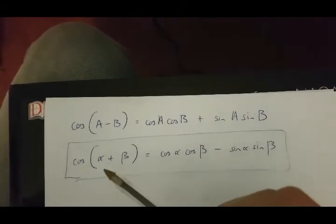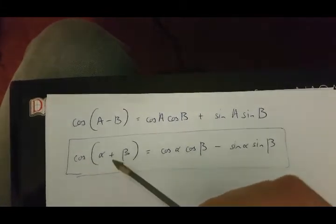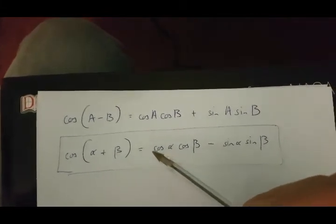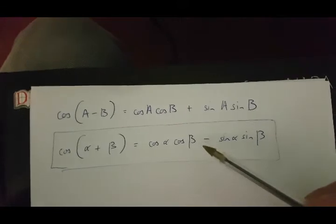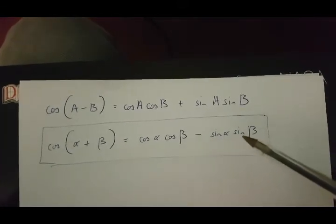Now to prove this to you, you first need to know that cos(alpha + beta) equals cos alpha cos beta minus sin alpha sin beta.